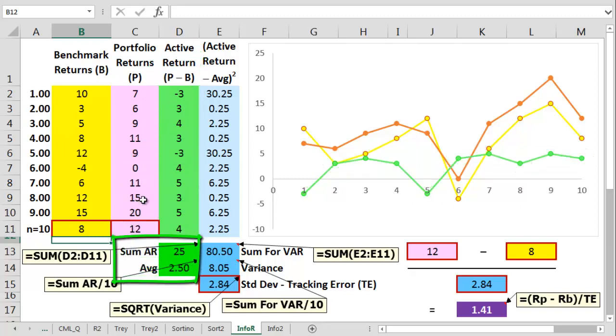We then find out the average active return over all ten pairs. Once we've got the average we take this away from every single actual active return then we square this result. We then add up all the squares. We divide this sum by ten, the number of pairs, to get to a variance figure.